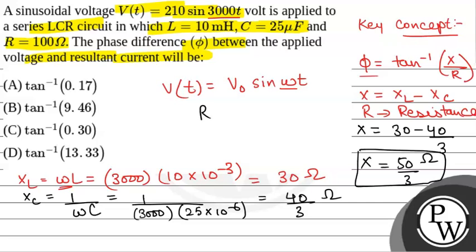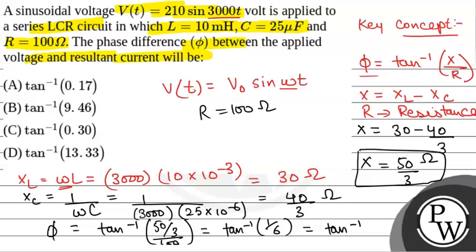And we have been given R equals 100 ohm. So the phase difference phi will be given by tan inverse X over R, that is 50 over 3 divided by 100. This will be equal to tan inverse 1 over 6. That will be equal to tan inverse approximately 0.17.